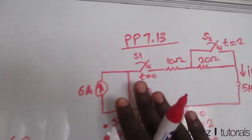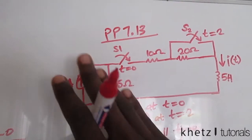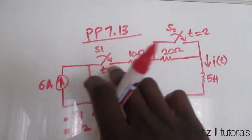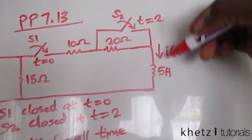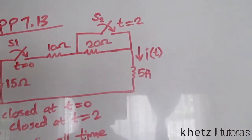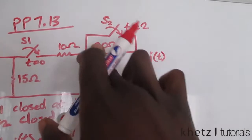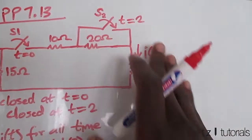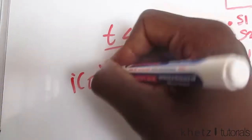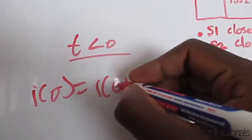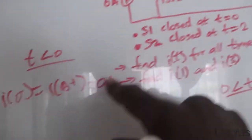Starting with time less than zero: at t < 0, none of the switches are closed. We only have part of the circuit active, and there is nothing supplying power to the side where i is. So i = 0 A for t < 0, and also just after zero by continuity of inductor current.